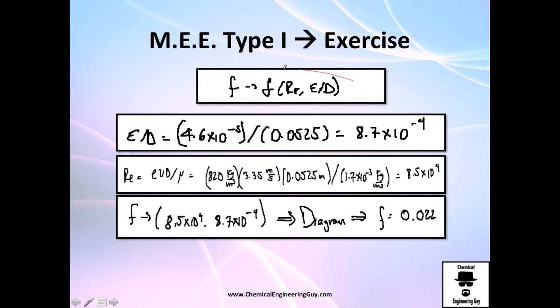The friction factor depends on Reynolds number and the material and the diameter of the pipe. So the material is steel so it has a relative roughness. It has a roughness, I need to divide it by the diameter in order to get the relative roughness which is this value right here.